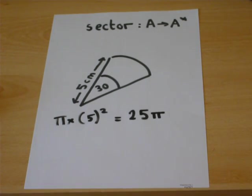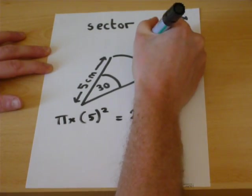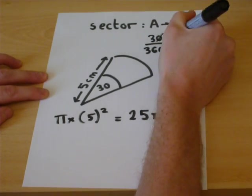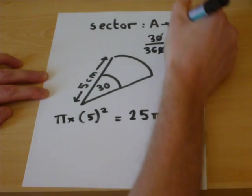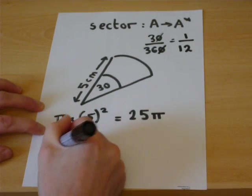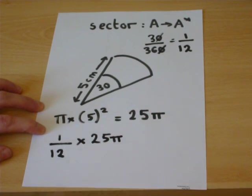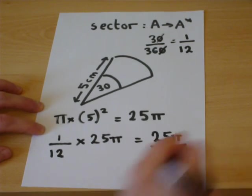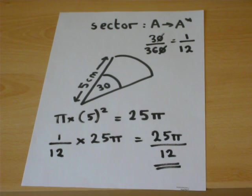The fraction of the circle is basically thirty degrees out of a full circle. We have thirty degrees out of a full circle. Because there are three hundred and sixty degrees in a circle, we have 30/360. The zeros cancel out, and 3/36 is 1/12. So we have one-twelfth of a full circle. To find the area of the sector, we must divide the full circle by twelve. So we have 25π divided by 12, and that would be the area of this particular sector.